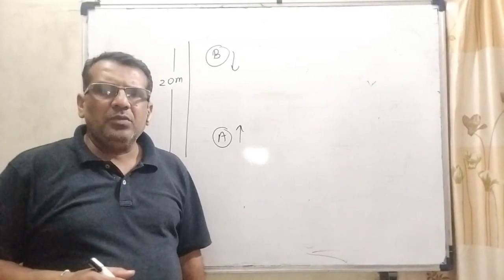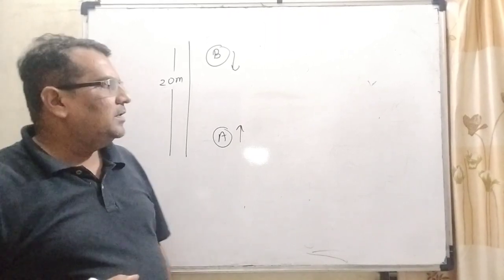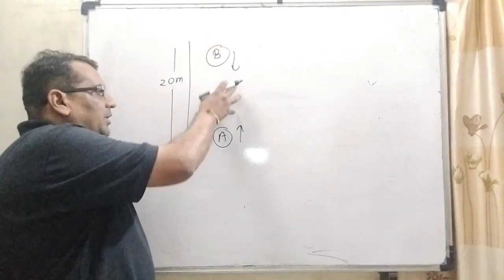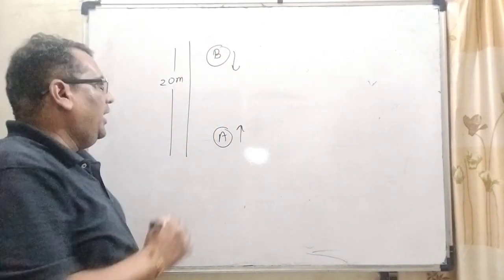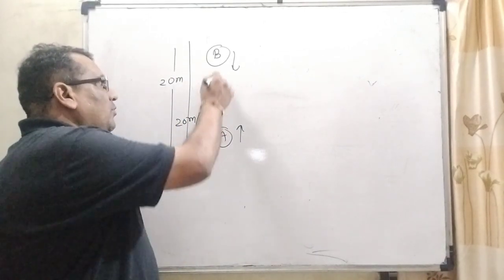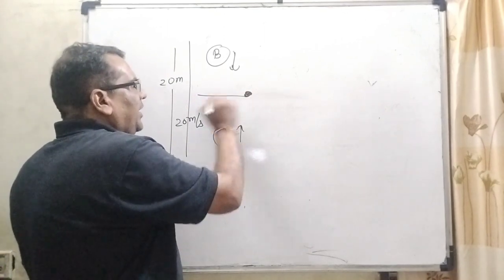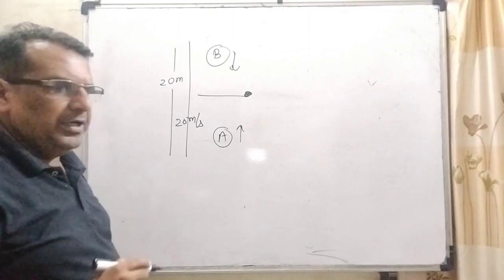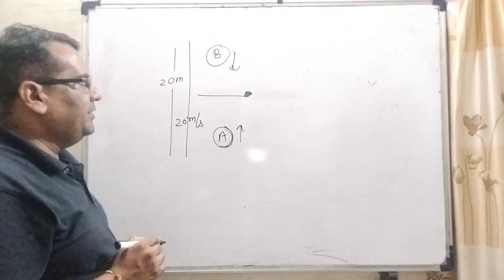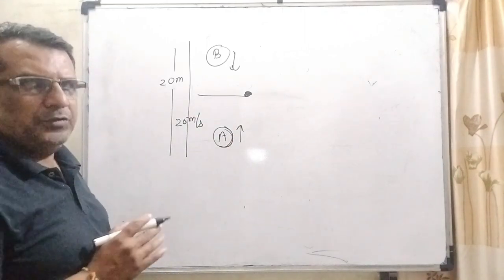In this question, we have to cover two topics: kinematics, equation of kinematics and collision. Here, given that B object is dropped and A object is thrown at the speed of 20 meter per second. At the same moment, it is dropped and somewhere, let us consider, they begin to collide together. So let us first find out the equations of motions and the distance.